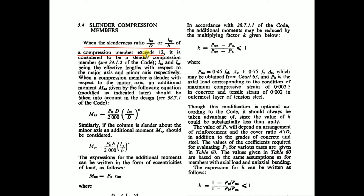Here, LEX/D or LEY/D — that value exceeds 12, then it is considered as a slender compression member, that is, a long column. Here, LEX and LEY are the effective lengths with respect to the major and minor axis respectively — the effective length of the column with respect to the major and minor axis of the column.